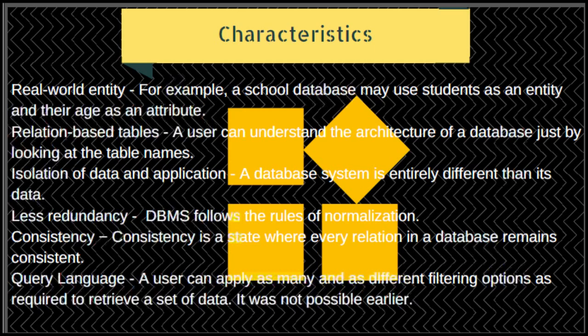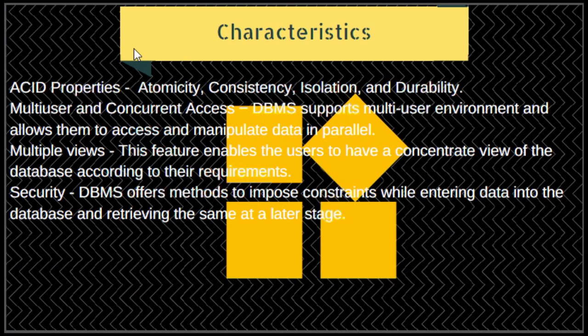DBMS is equipped with a query language, which was not possible in file processing systems. This makes it more efficient to retrieve and manipulate data — a user can apply as many different filtering options as required. The next characteristic is ACID properties: Atomicity, Consistency, Isolation, and Durability. The DBMS follows this concept; these properties are applied on transactions that manipulate data and keep the database in a healthy state.